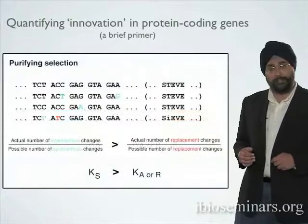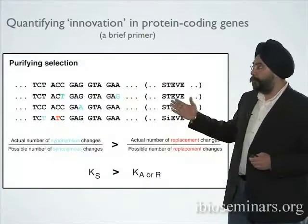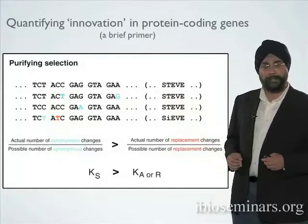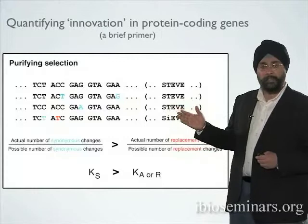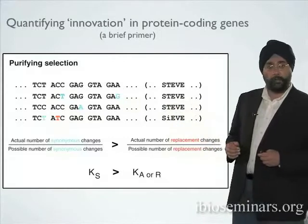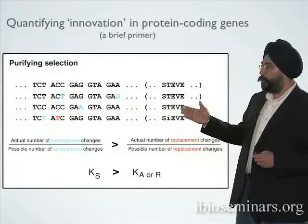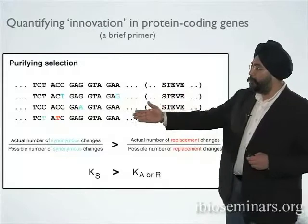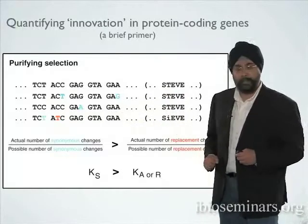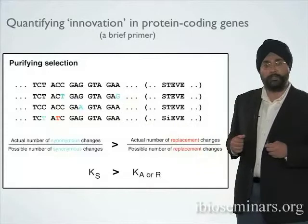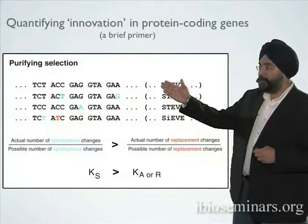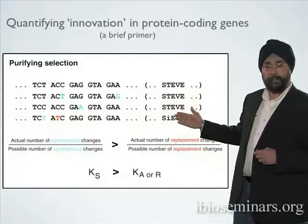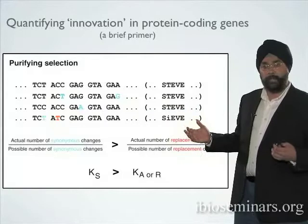For most genes in the genome, you do care about the final product — the amino acid sequence of the resulting protein. Here I have a hypothetical example where a protein-coding gene is represented in these triplets of codons, and what you'll see is there are a lot more blue changes — non-amino acid altering or silent changes — and very rarely do you see a replacement or non-synonymous change. The net result is that, regardless of all this change at the nucleotide level, the amino acid sequence remains stable, because that is really what is being selected for by evolution.